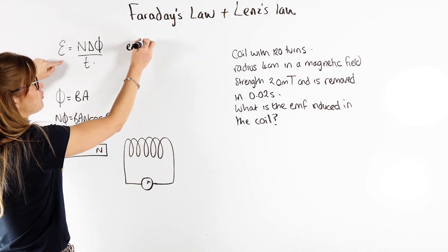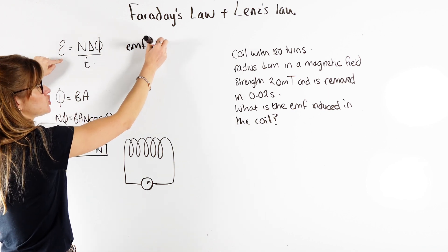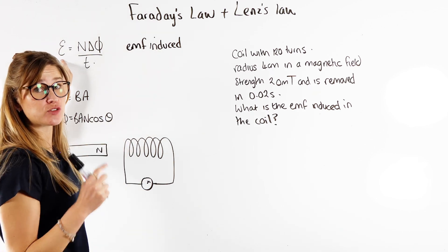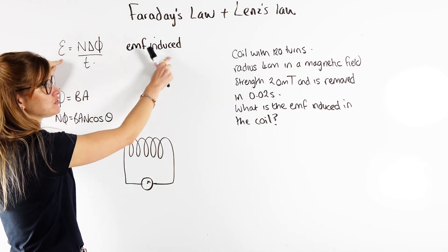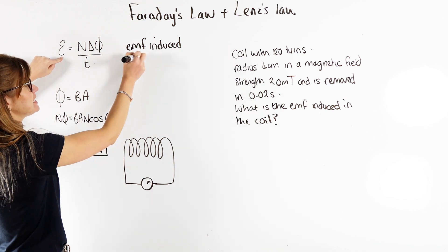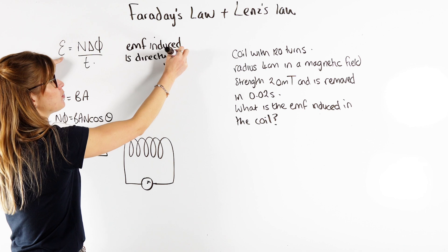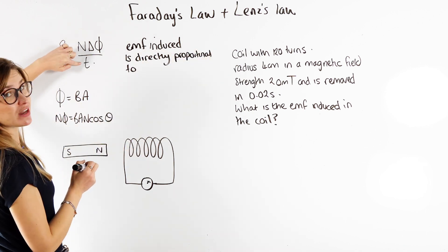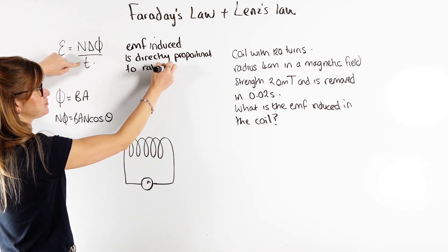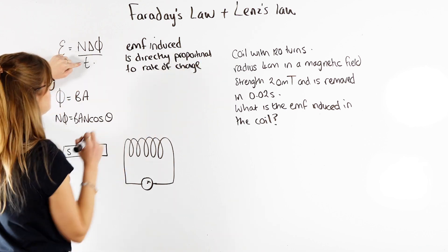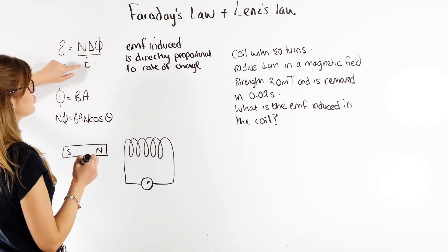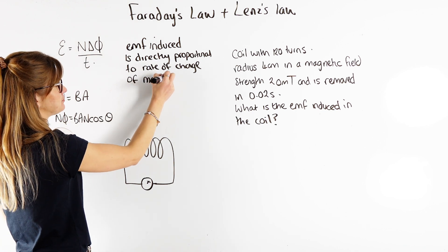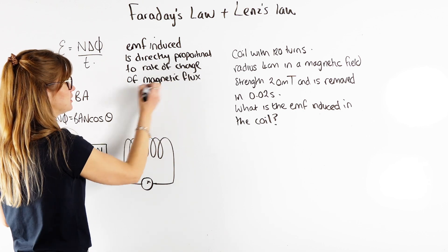The EMF, or the electromotive force — those two words have to be there. And if you did triple physics for GCSEs, you've already done that. The EMF induced is directly proportional to something divided by time — that is the rate of change. We can see that triangle represents change. The rate of change of N times that symbol represents the magnetic flux linkage.